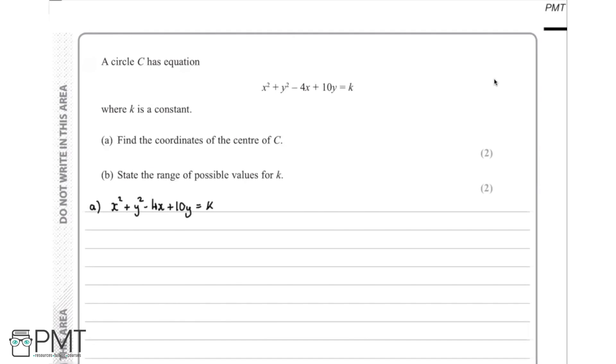So in this question, we're given a circle C which has the equation x squared plus y squared minus 4x plus 10y is equal to k, where k is a constant.